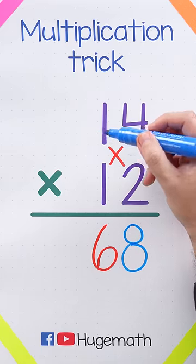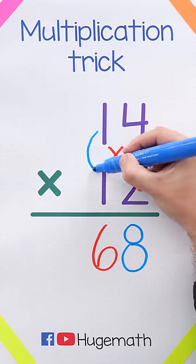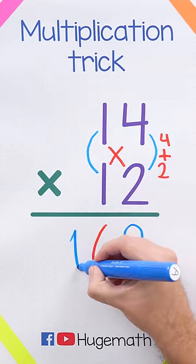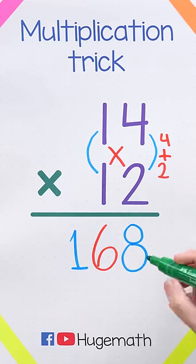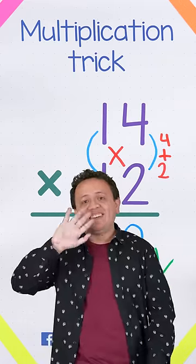Finally, we have to multiply the digits in the tenth place column. 1 times 1 equals 1. Our final answer is 14 times 12 equals 168. That's all for today. See you next lesson.